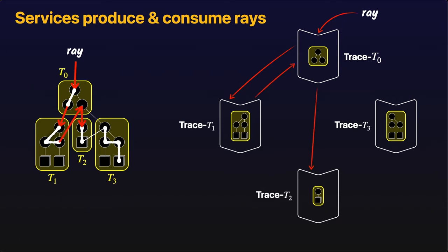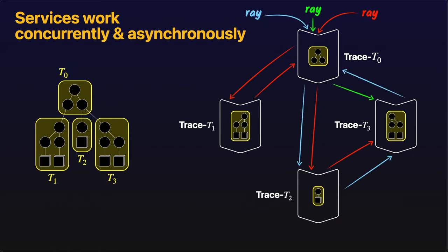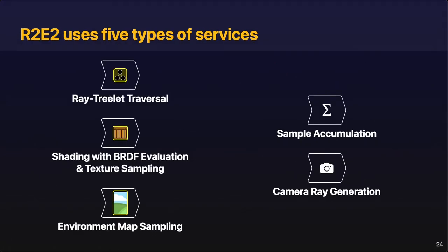This is how R2E2 breaks down BVH traversal. These services work concurrently and asynchronously to trace rays through the BVH. Overall, there are five types of services in R2E2: ray treelet traversal; surface shading, which evaluates BRDFs and performs texture mapping for ray hits; environment shading services for sampling environment maps; and two other services — one for accumulating samples into the frame buffer and one for generating camera rays. As the computation proceeds, these services process requests and generate new requests for other services.